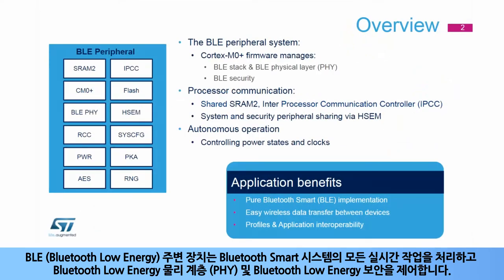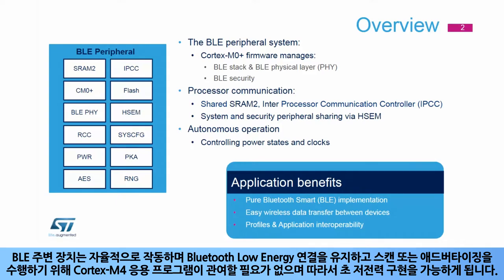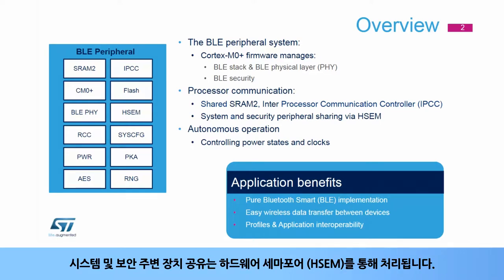The Bluetooth Low Energy, or BLE, peripheral handles all real-time operations of the Bluetooth smart system, controls the Bluetooth Low Energy physical layer and security. Communication with the Cortex-M4 processor, which handles the BLE profiles and application, is done via a memory-mapped mailbox and the inter-processor communication controller. The BLE peripheral operates autonomously and doesn't require application Cortex-M4 involvement to maintain a BLE connection, perform scanning, or advertising, thus enabling an ultra-low-power implementation. Sharing of system and security peripherals is handled via the hardware semaphores, or HSEM.